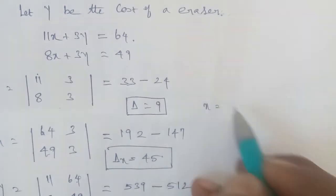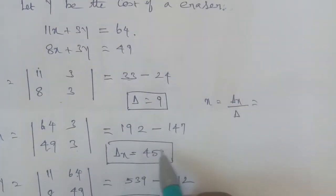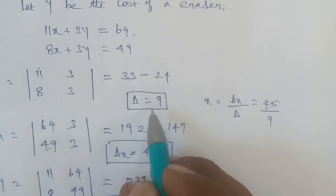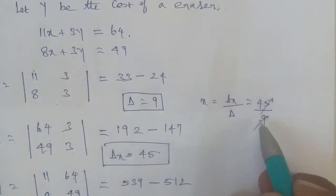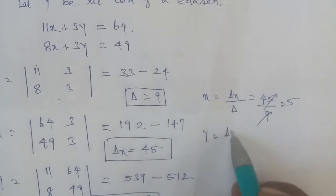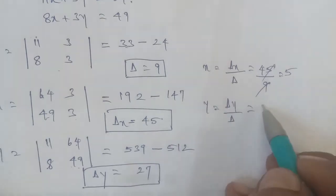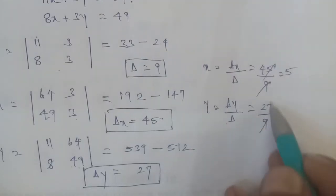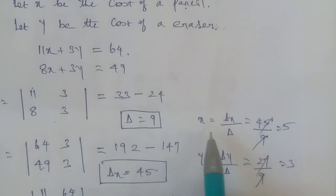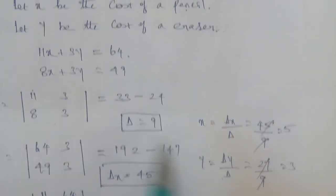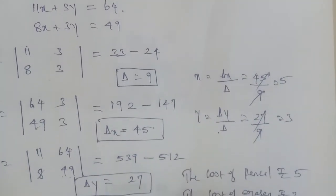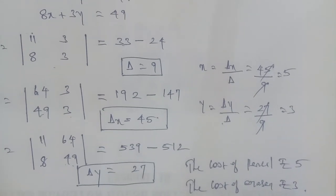Applying Cramer's formula: x equals delta x divided by delta, so x equals 45 divided by 9, which gives x equals 5. And y equals delta y divided by delta, so y equals 27 divided by 9, which gives y equals 3. Therefore, the cost of each pencil is Rs. 5 and the cost of each eraser is Rs. 3. Thank you.